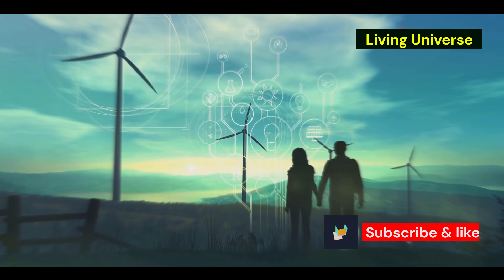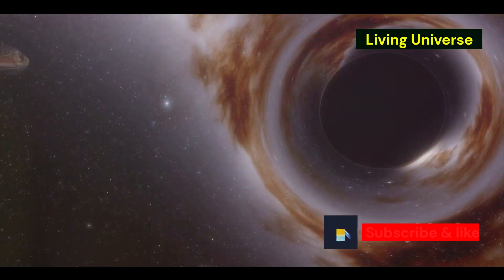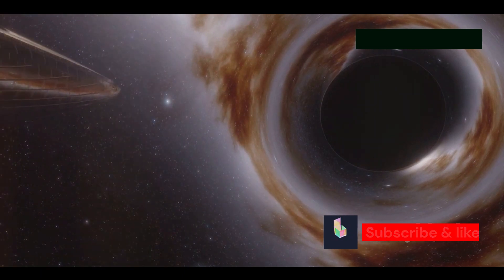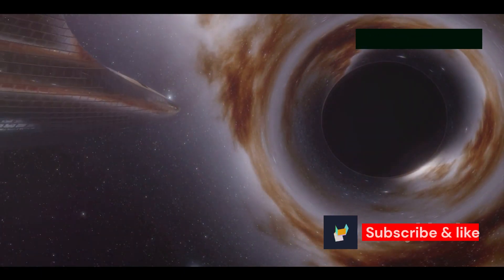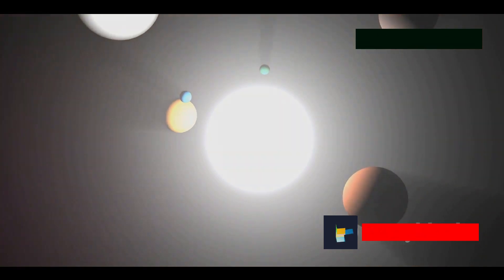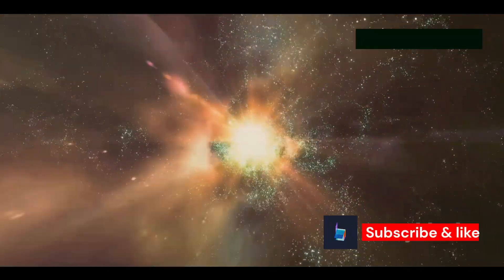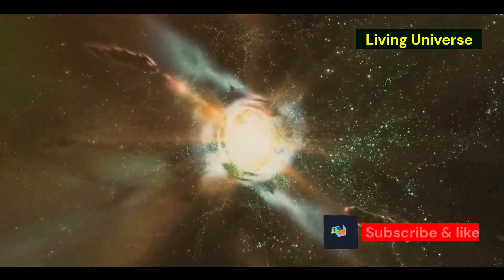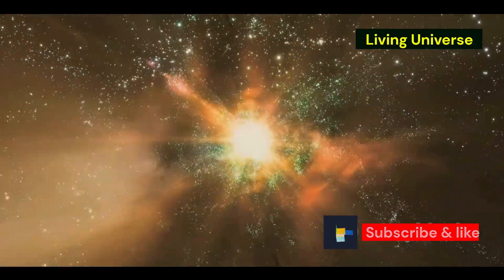But what makes this concept even more fascinating is the scale at which it could operate. The study suggests that an IDS around a supermassive black hole could meet the energy needs of a Type III civilization. This is a civilization that can harness and control energy at a galactic scale, operating across intergalactic distances. It's a level of advancement that's almost beyond our comprehension, yet it serves as a reminder of the unimaginable potential that exists out there in the universe.